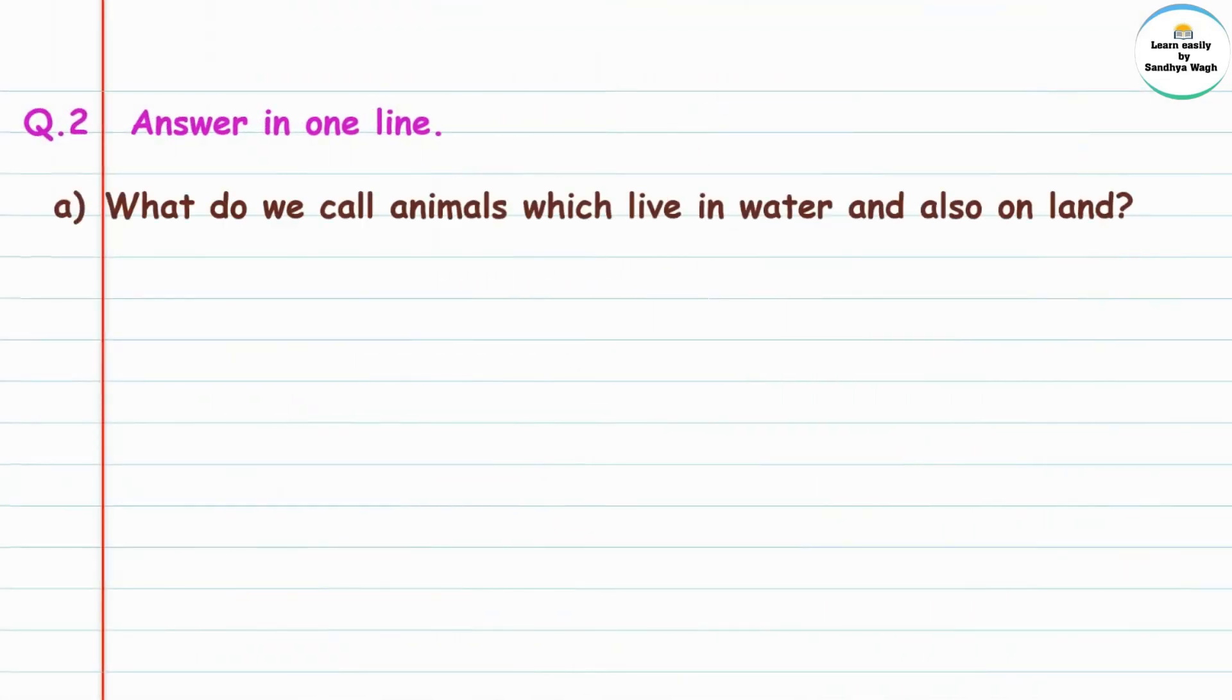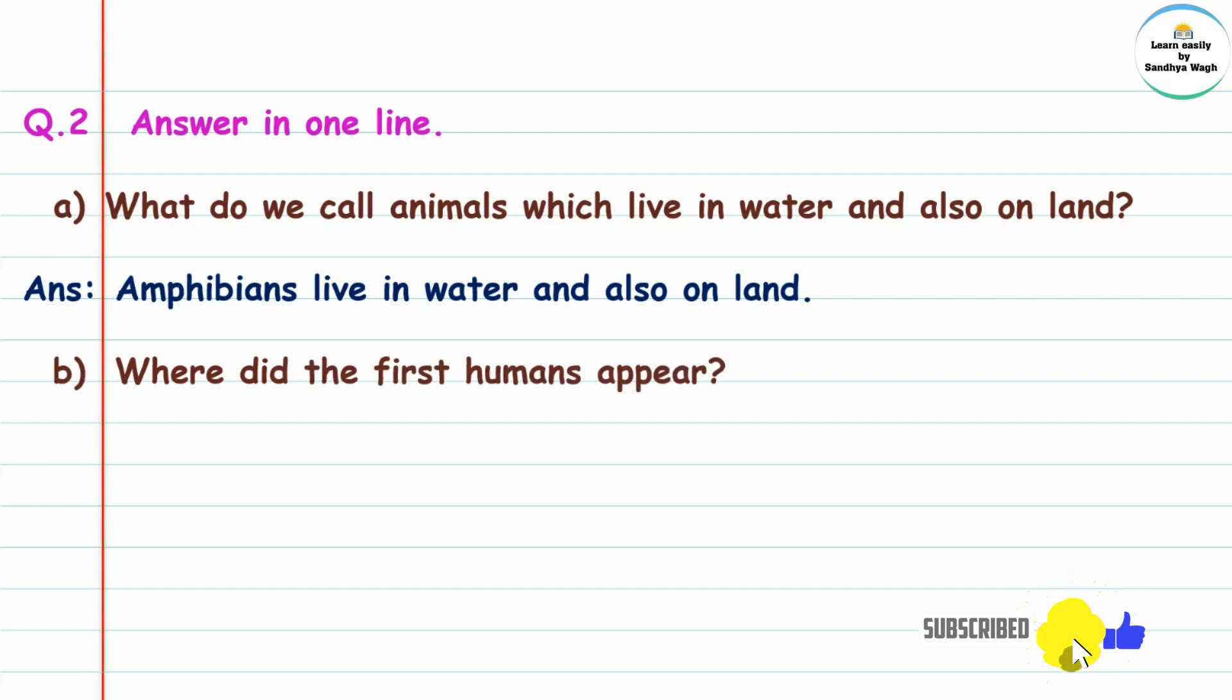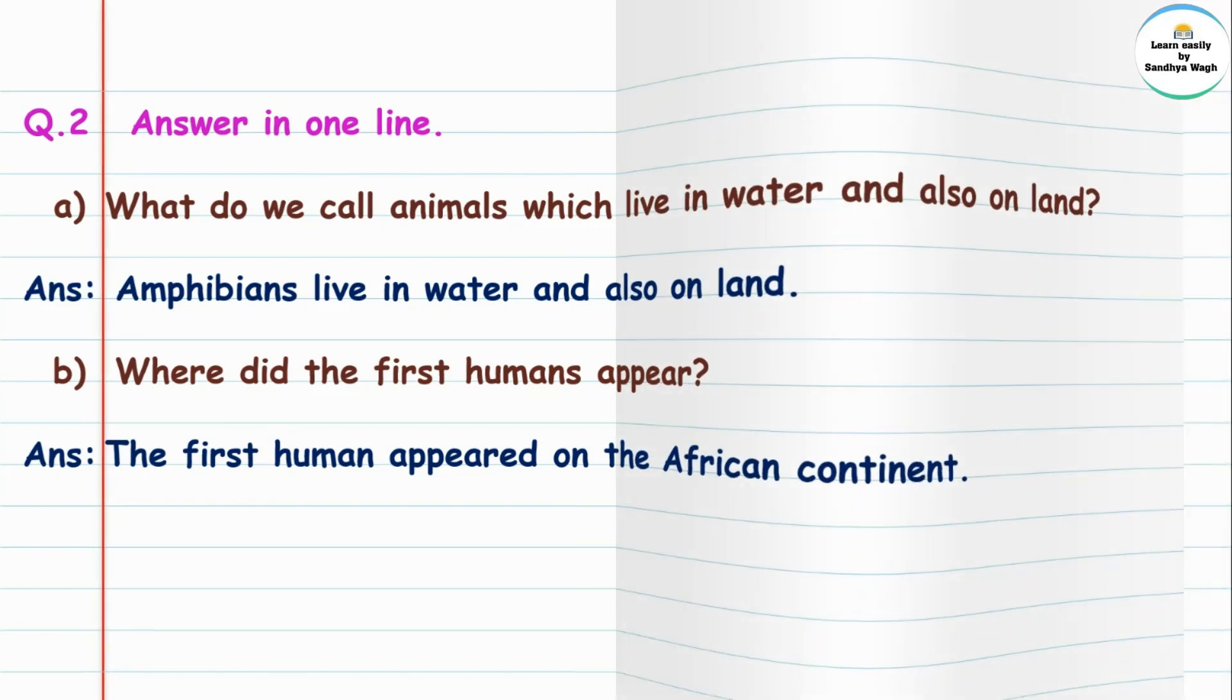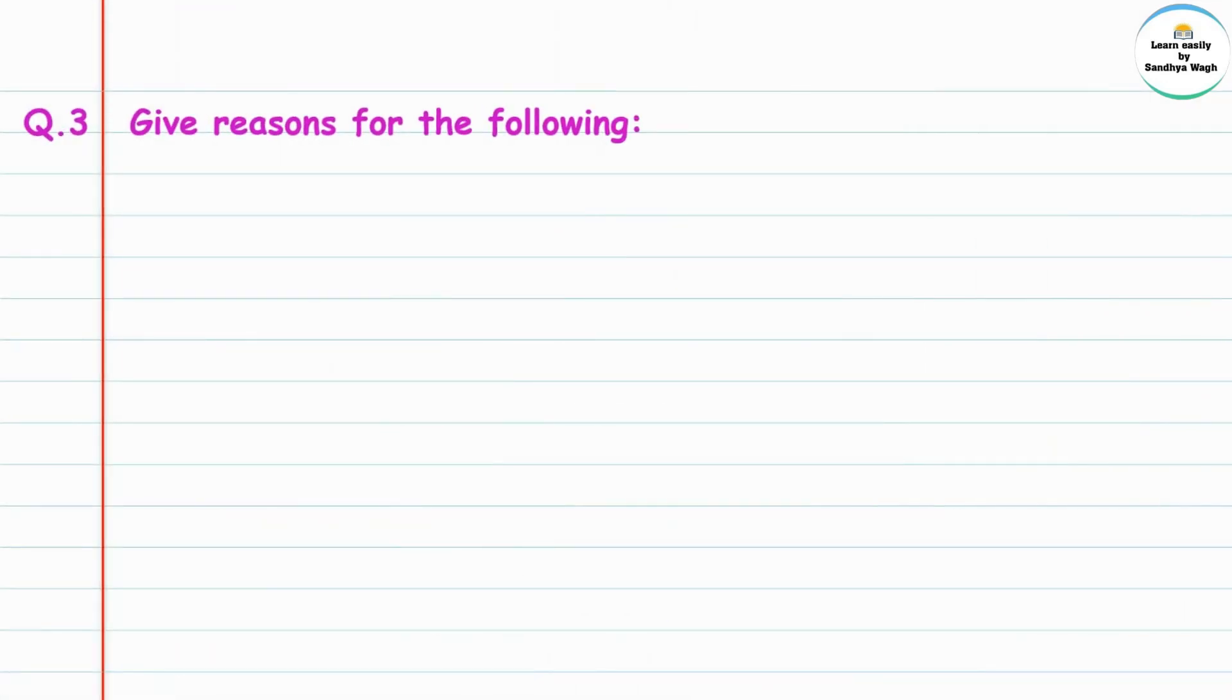Question 2: Answer in one line. What do we call animals which live in water and also on land? Answer: Amphibians live in water and also on land. Next is: Where did the first humans appear? Answer: The first human appeared on the African continent.